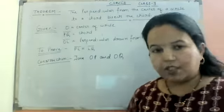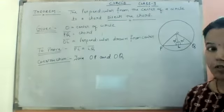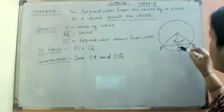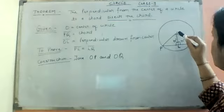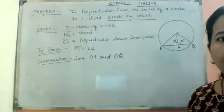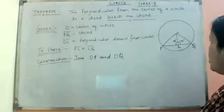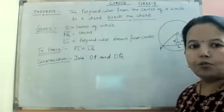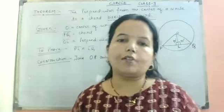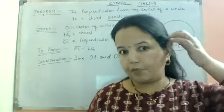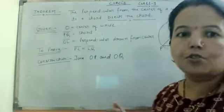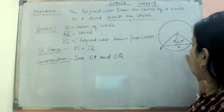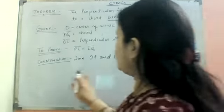Now, looking at this figure, we can find that there are two triangles — one is triangle OLP and the second is triangle OLQ. We already know congruence, as we completed that part in the previous chapter. So we are going to use congruence here. Taking triangles OLP and OLQ, we write the solution.